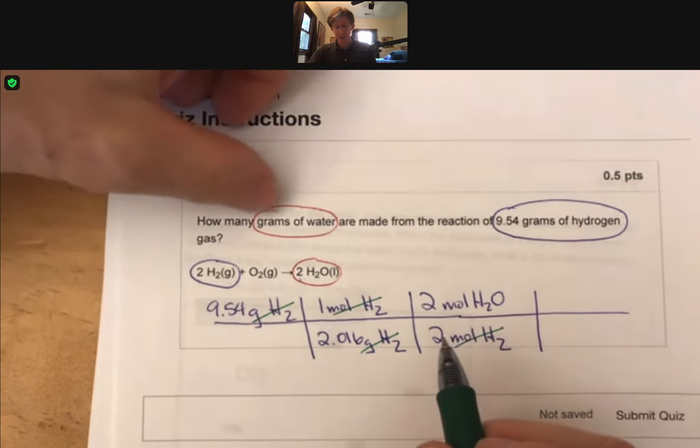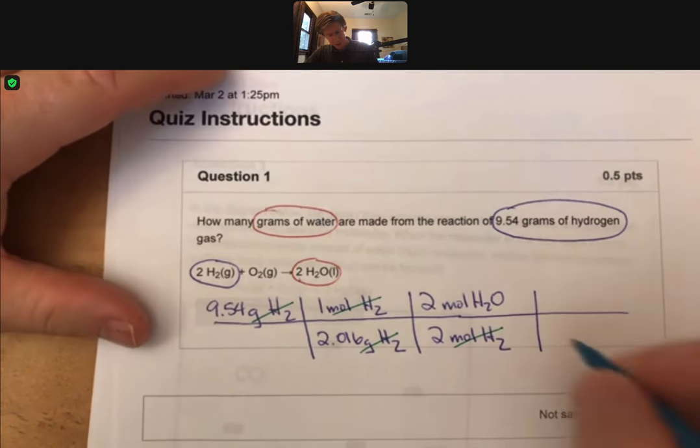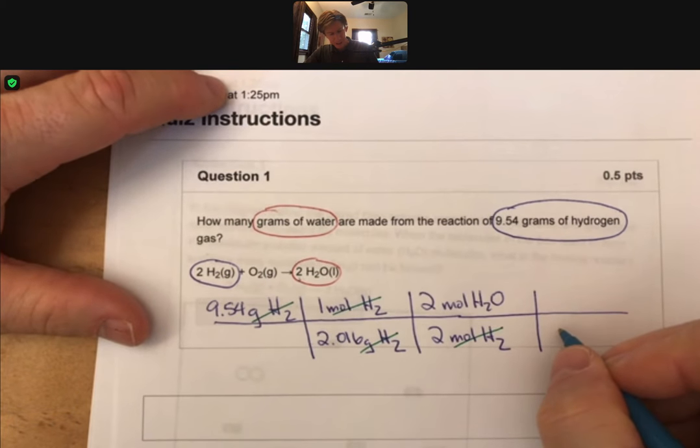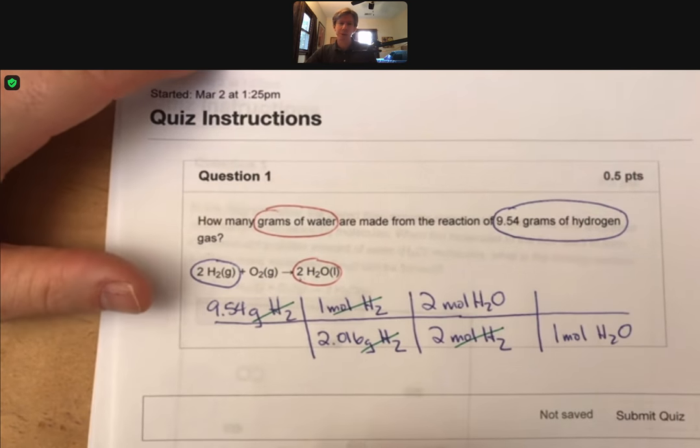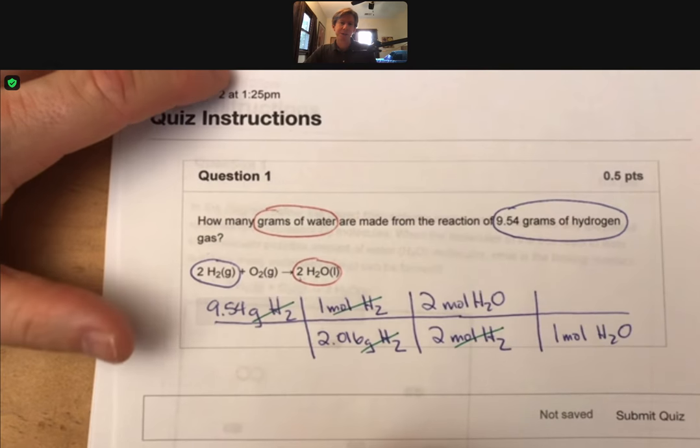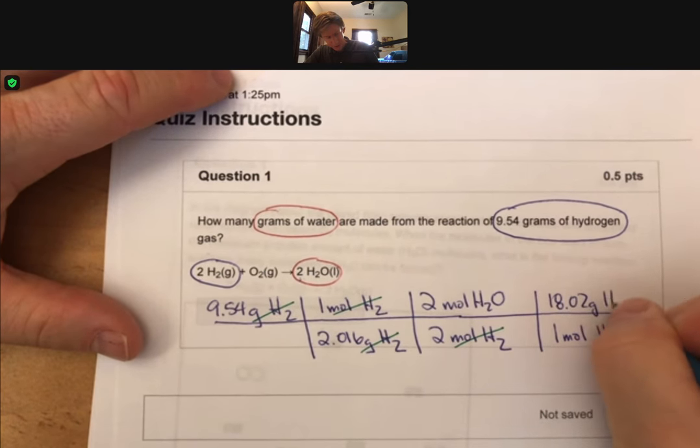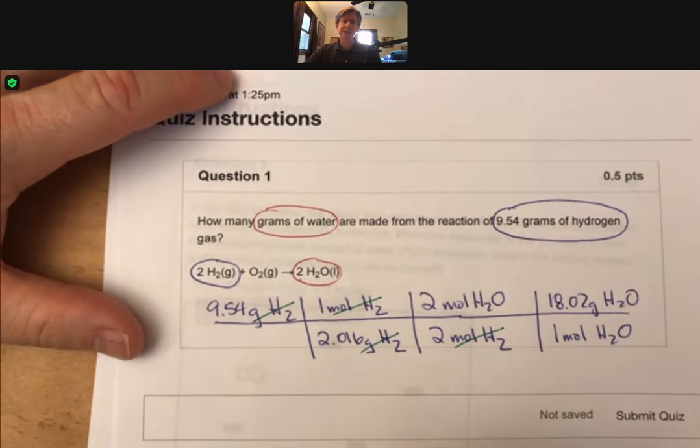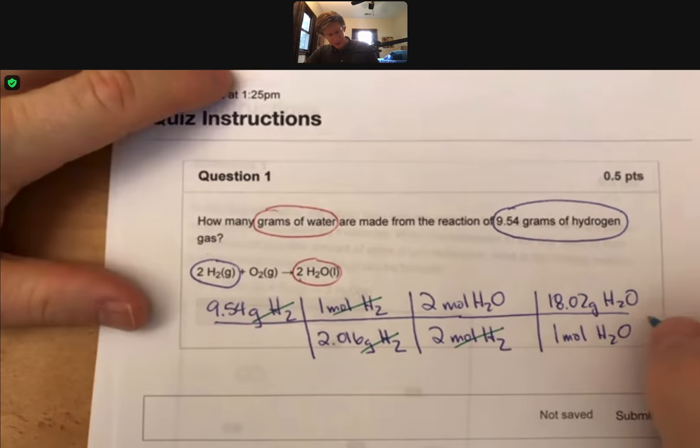But we want grams of water, or grams of H2O. So, to get grams from moles, we need the molar mass. The molar mass of H2O from the periodic table, 18.02 grams of H2O. And that's by adding up the two H's and one O. That's our setup.